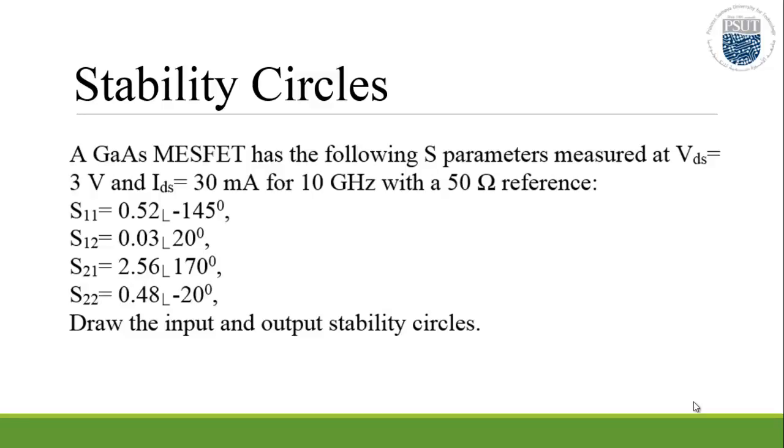S11 equals 0.52 with phase minus 145. S12 equals 0.03 with phase 20. S21 equals 2.56 with phase 117. S22 equals 0.48 with phase minus 20. Draw the input and output stability circles.